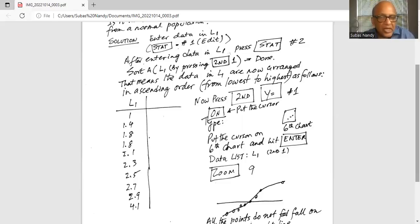So what do we do? We press second, Y equal to. Then press number one. The first line, the cursor should be on on. Put the cursor on on. It should be flashing on on. Then the type, the second line, we should select the last type of chart, the sixth type of chart. Press enter. So it should be flashing on the sixth chart. Then your data list should be L1. If it is not L1, make it L1 by second one. Then you press the zoom button. It is in the top row, the third key, zoom button, and then select number nine.